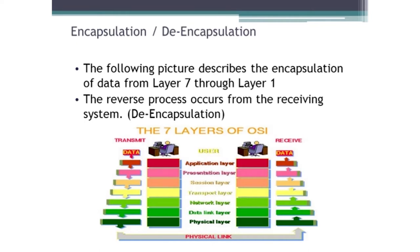That Ethernet encapsulation includes what we call MAC addresses — the media access controls — of all the different devices I need to cross through to get to the point where my router can send it across the internet link. That layer 2 information will then be stripped off by the router.